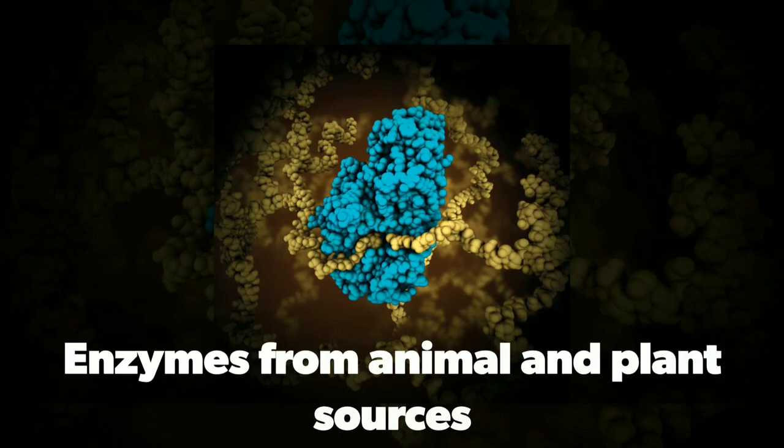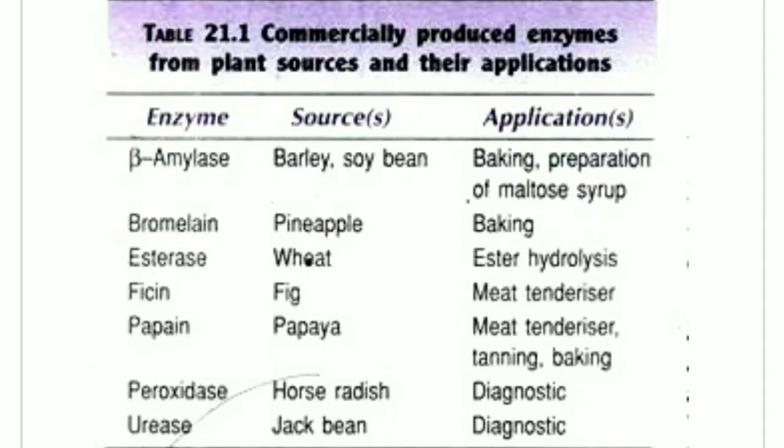Enzymes from animal and plant sources — their source and applications. Beta-amylase is obtained from barley and soybean; it is used for baking and preparation of maltose syrup. Bromelain is obtained from pineapple and is used for baking. Esterase is obtained from wheat and is used for ester hydrolysis.